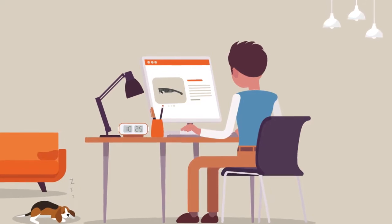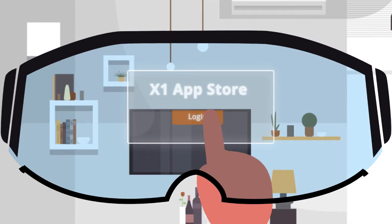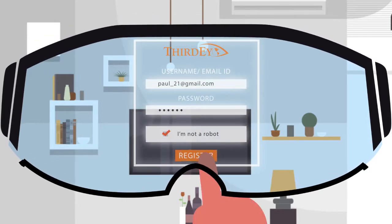So how do you get started? It is as easy as purchasing the X1 from our website, then downloading the ThirdEye app from the X1 app store and creating an account.